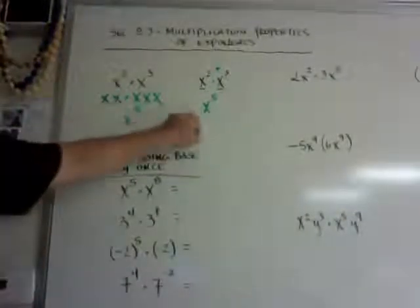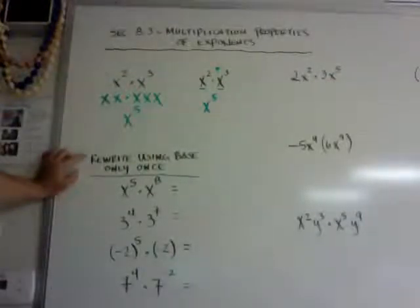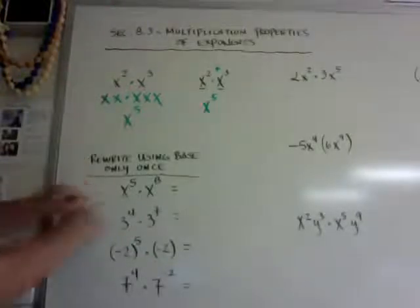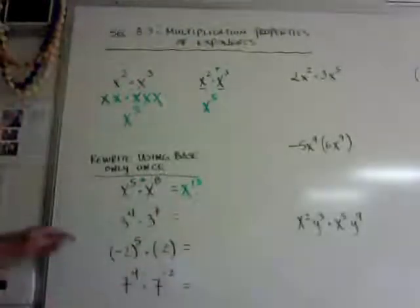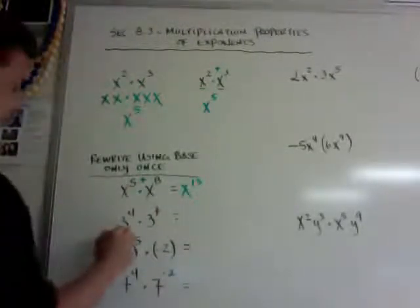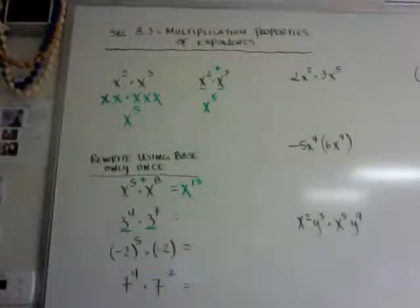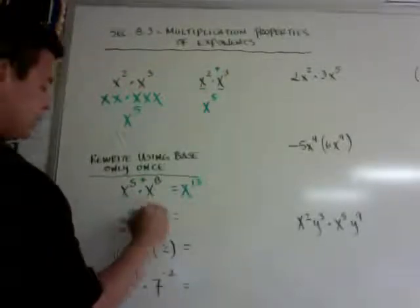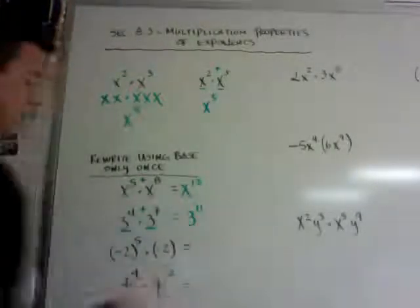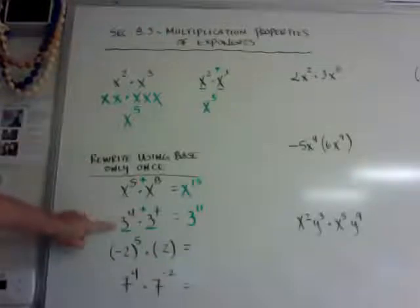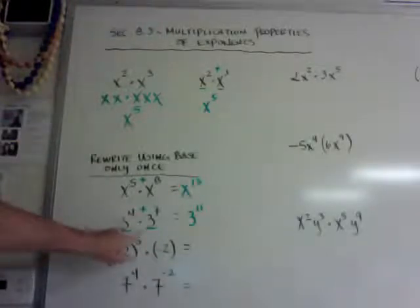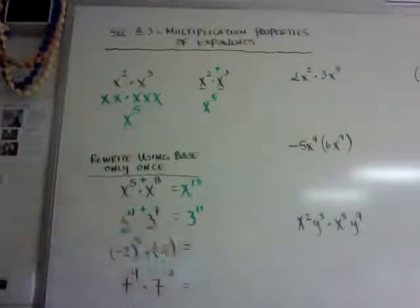So the long way and the short way come out the same. If the homework says rewrite using the base only once, you can just add the exponents and get x to the 13th power. If you have a number for a base, you don't multiply the base — you leave the base the same. So if this is 3 and this is 3, you just add the exponents and get 3 to the 11th power.